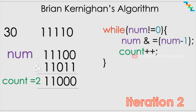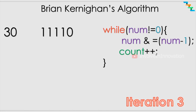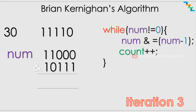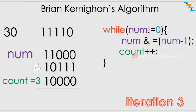After two iterations the count is 2 and the number is 11000. When you subtract 1 from 11000, the rightmost set bit is at index 3; starting from index 3 everything gets flipped, giving 10111. AND with 11000 gives 10000, which is 1 followed by 4 zeros.